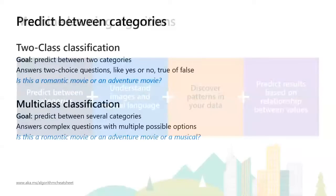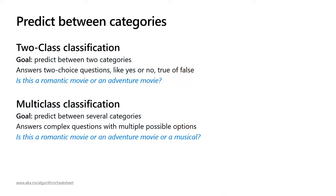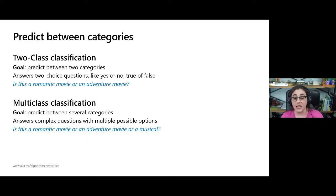Predicting between categories has two different types of machine learning algorithms. One is two-class classification. An example question is: I've got a ton of movies and data on those movies, and I want to answer — is this movie a romantic movie or an adventure movie? So I'm choosing between two categories. A similar one is multi-class classification — basically the same thing but choosing between romantic, adventure, or musical. Things might get more complicated because the difference between a romantic and a musical might not be that far off.